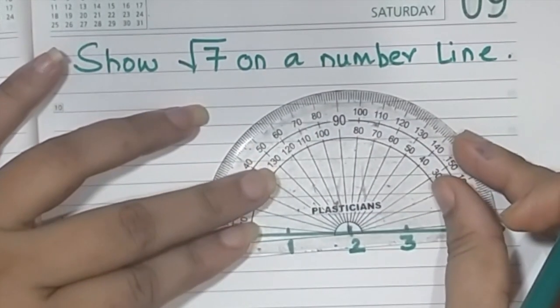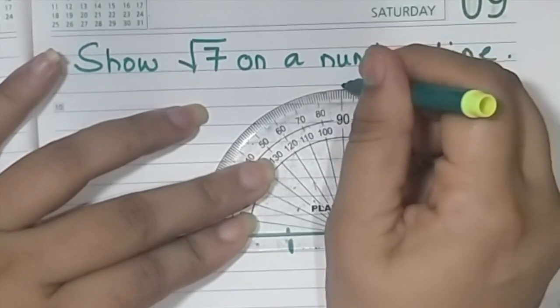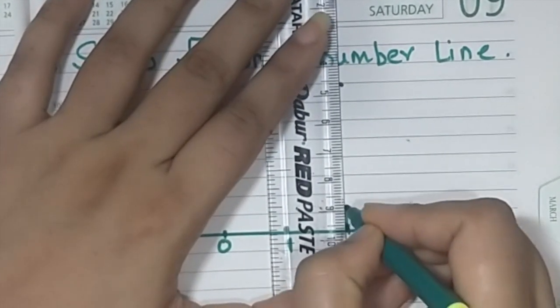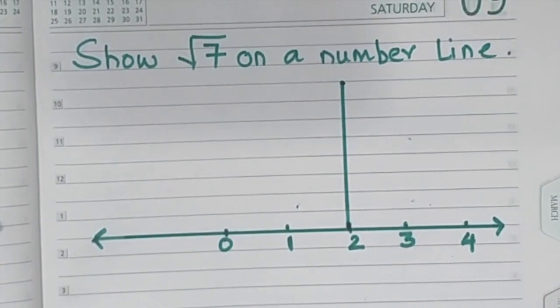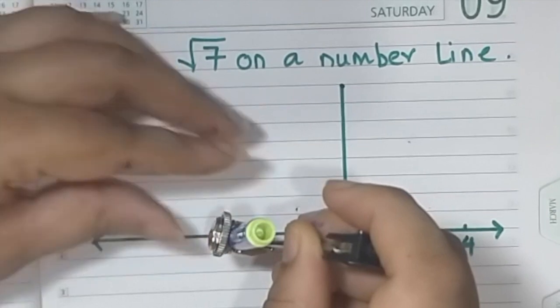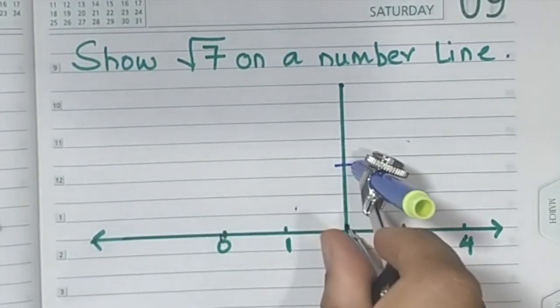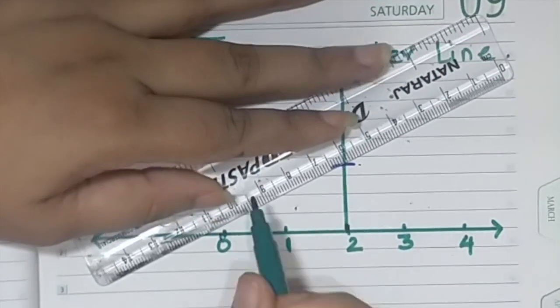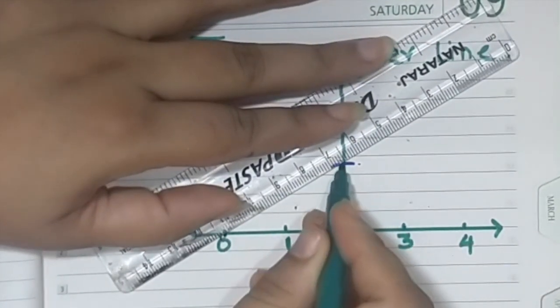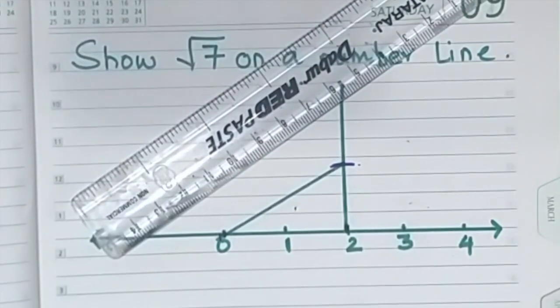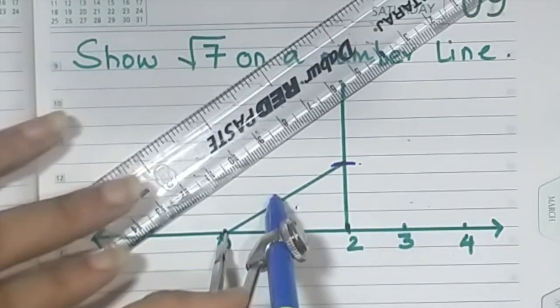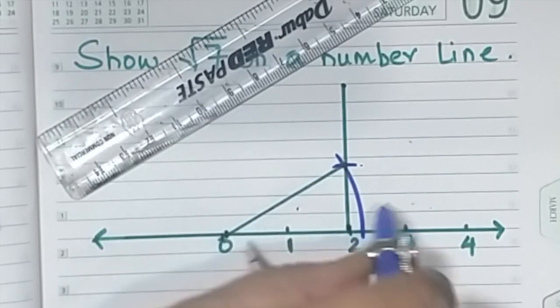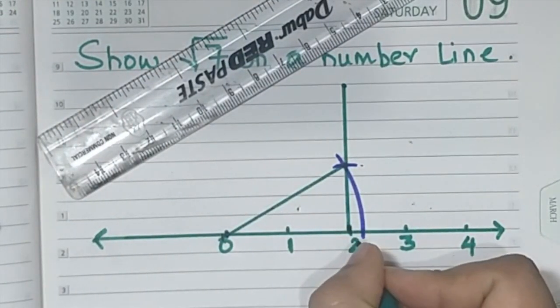So for root 5 what we do is, at the 2 mark, mark 90 degrees. After that, take a distance of 1 unit and draw an arc. Join this thing over here, 0 to 1, and then this distance from 0 to 1. This is root 5.